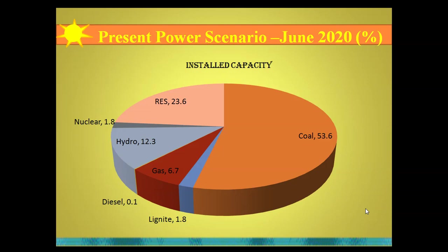Coal has decreased to 53.6 percent, nuclear is 1.8 percent, hydro electricity is 12.3 percent, diesel is just 0.1 percent, gas is contributing 6.7 percent, and lignite is 1.8 percent. The target is to decrease the contribution of coal and increase renewable energy sources so that more clean power is available.